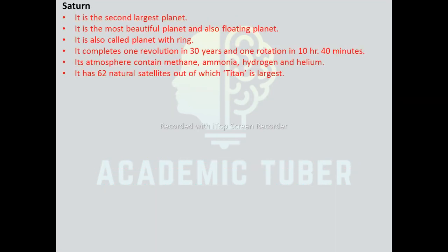Saturn: it is the second largest planet and the most beautiful planet, also called the floating planet. It is also called the planet with rings. It accomplishes one revolution in 30 years and one rotation in 10 hours 40 minutes. Its atmosphere contains methane, ammonia, hydrogen, and helium. It has 62 natural satellites, out of which Titan is the largest.